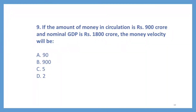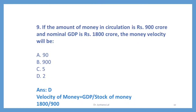Question number 9. If the amount of money in circulation is Rs. 900 crore and nominal GDP is Rs. 1800 crore, the money velocity will be. Here you can use the formula: velocity of money equals GDP divided by stock of money. So the velocity equals 1800 divided by 900, which gives us 2. So the velocity of money will be 2 — correct option is D.